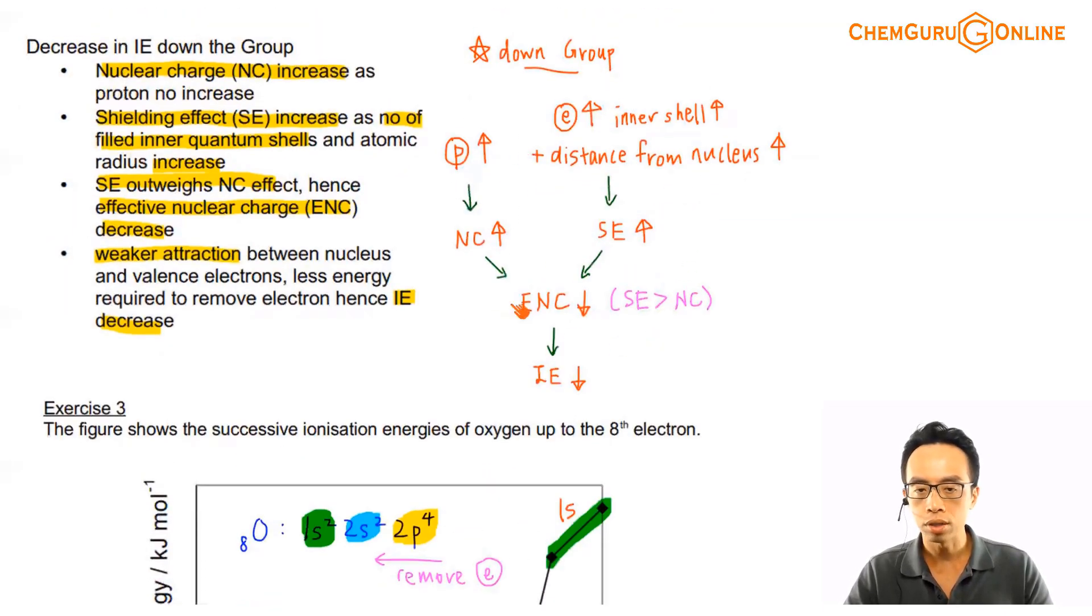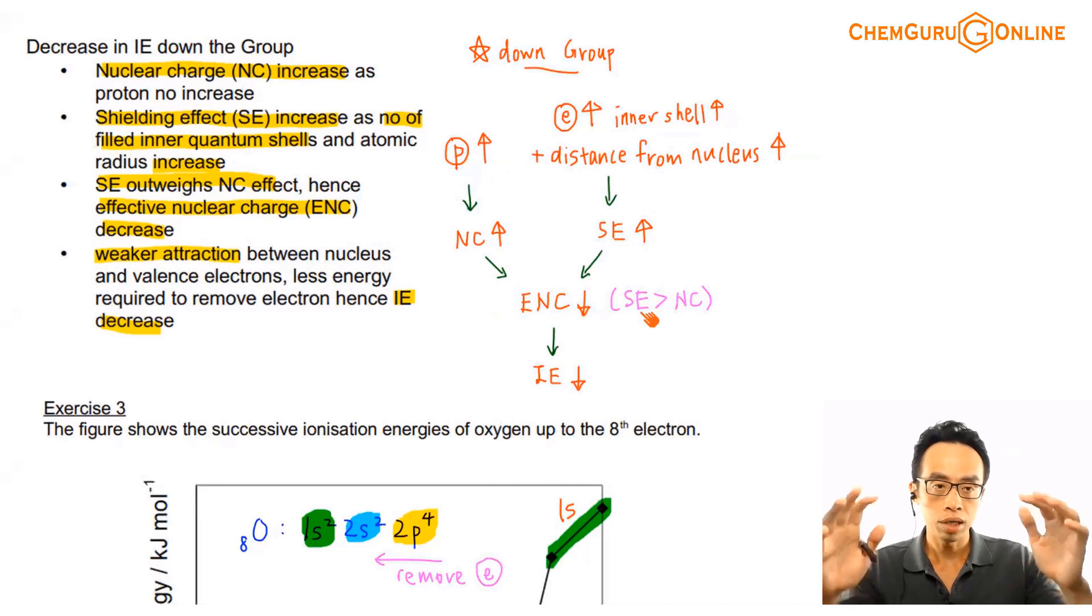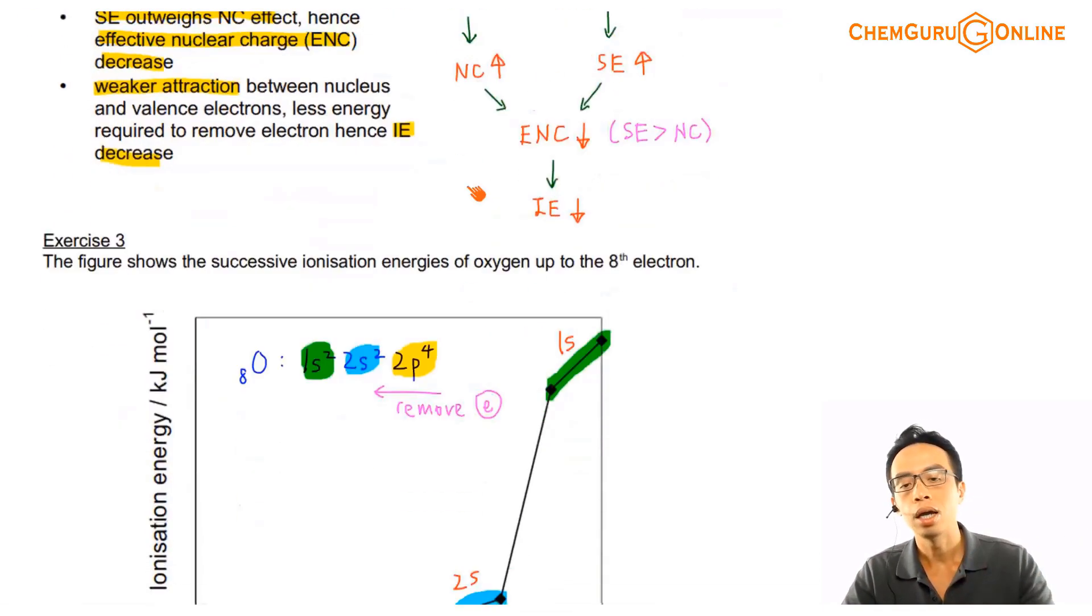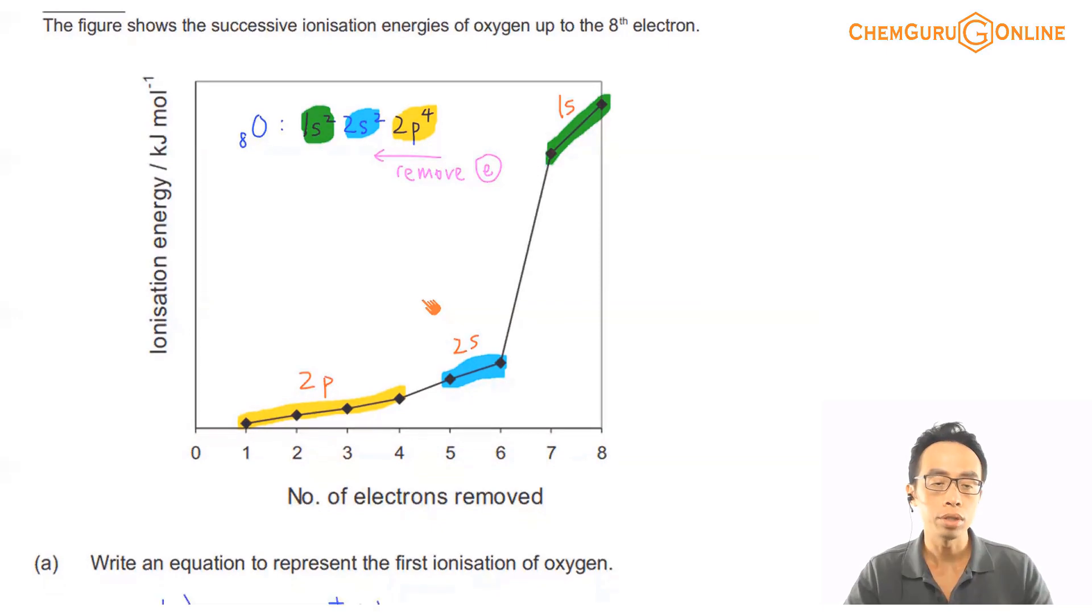But recommendation is again, we use the flowchart to make it easier for us to remember, what is the thing I talk about first, then what is the next thing I do, then how do I combine them together to talk about ENC, and then subsequently link to ionization energy.